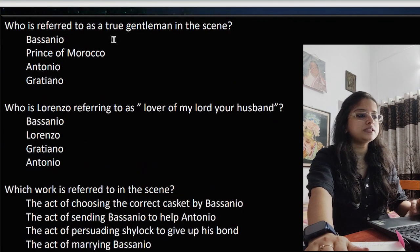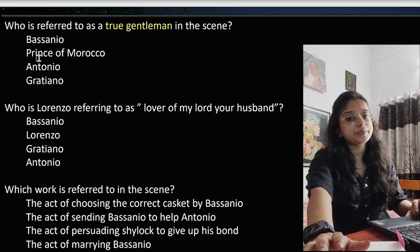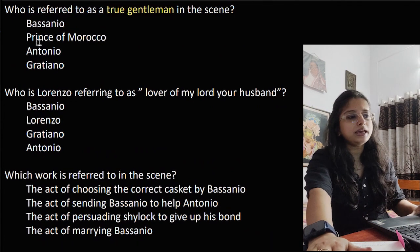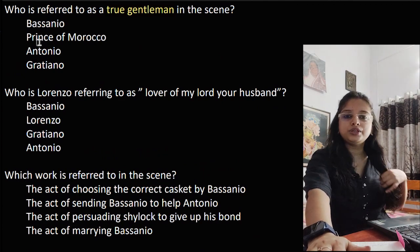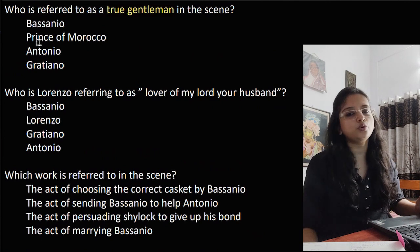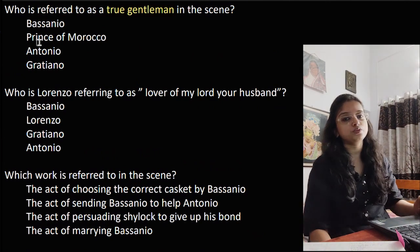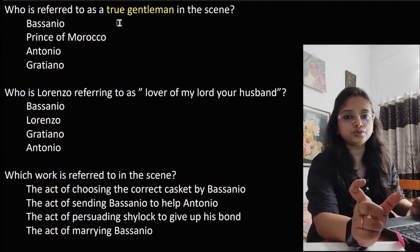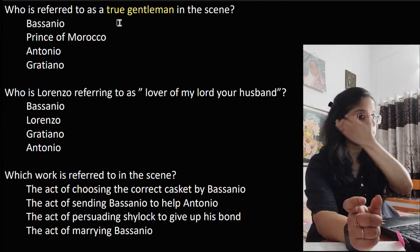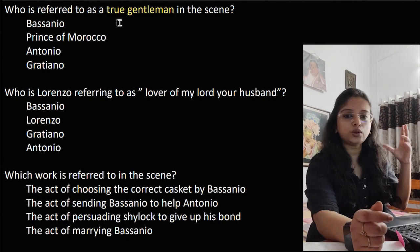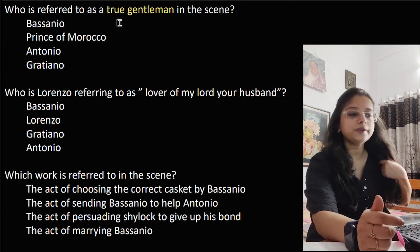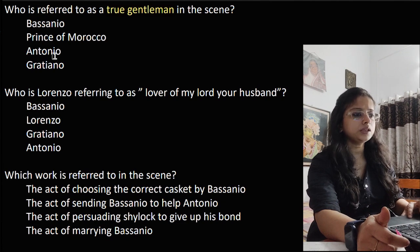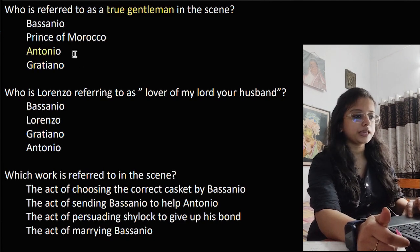Who is referred to as a true gentleman in this scene? Recall what happens: Lorenzo was very thankful to Portia for helping Antonio. Portia gives the duties to Lorenzo and Jessica, saying she will go and pray in the monastery till Bassanio's return — but in reality she is going to Venice to help Antonio. The options are Bassanio, Prince of Morocco, Antonio, or Graziano. The answer is Antonio.